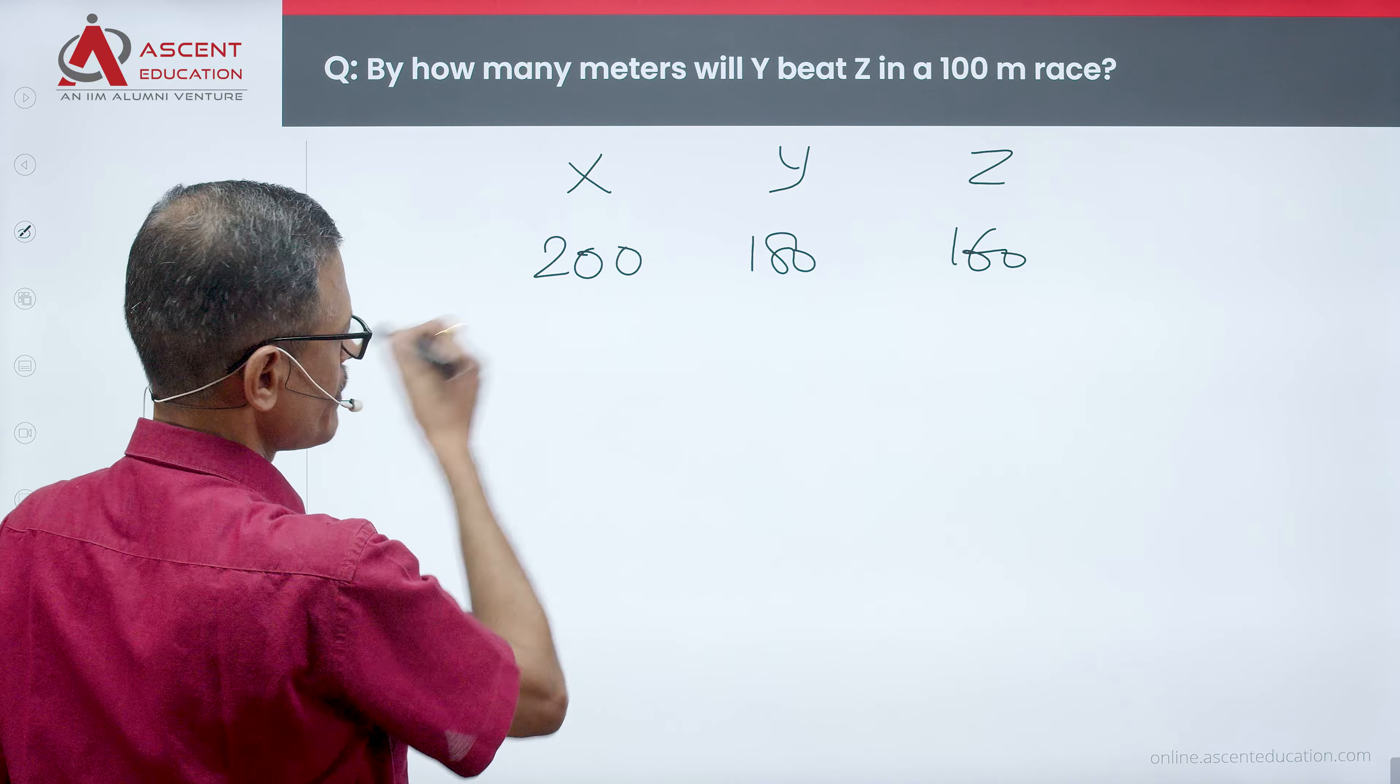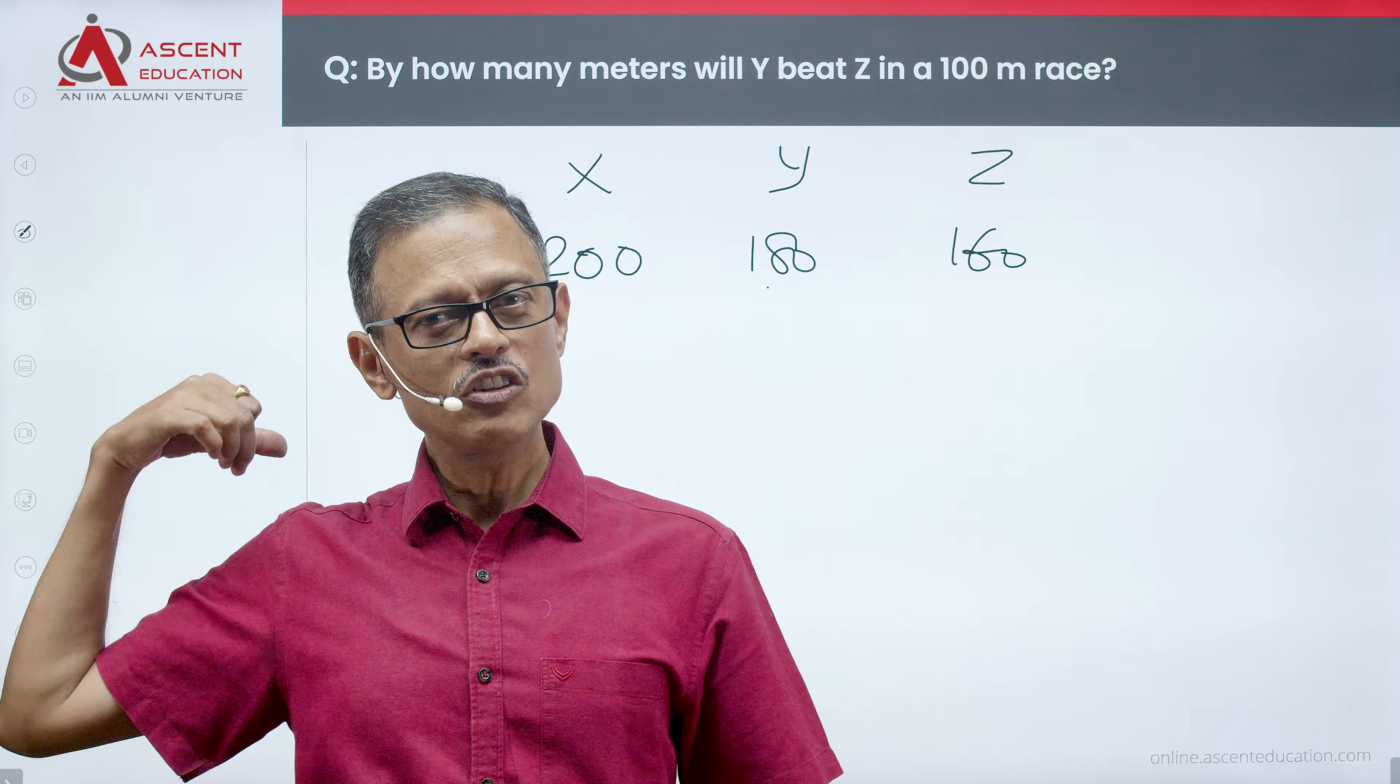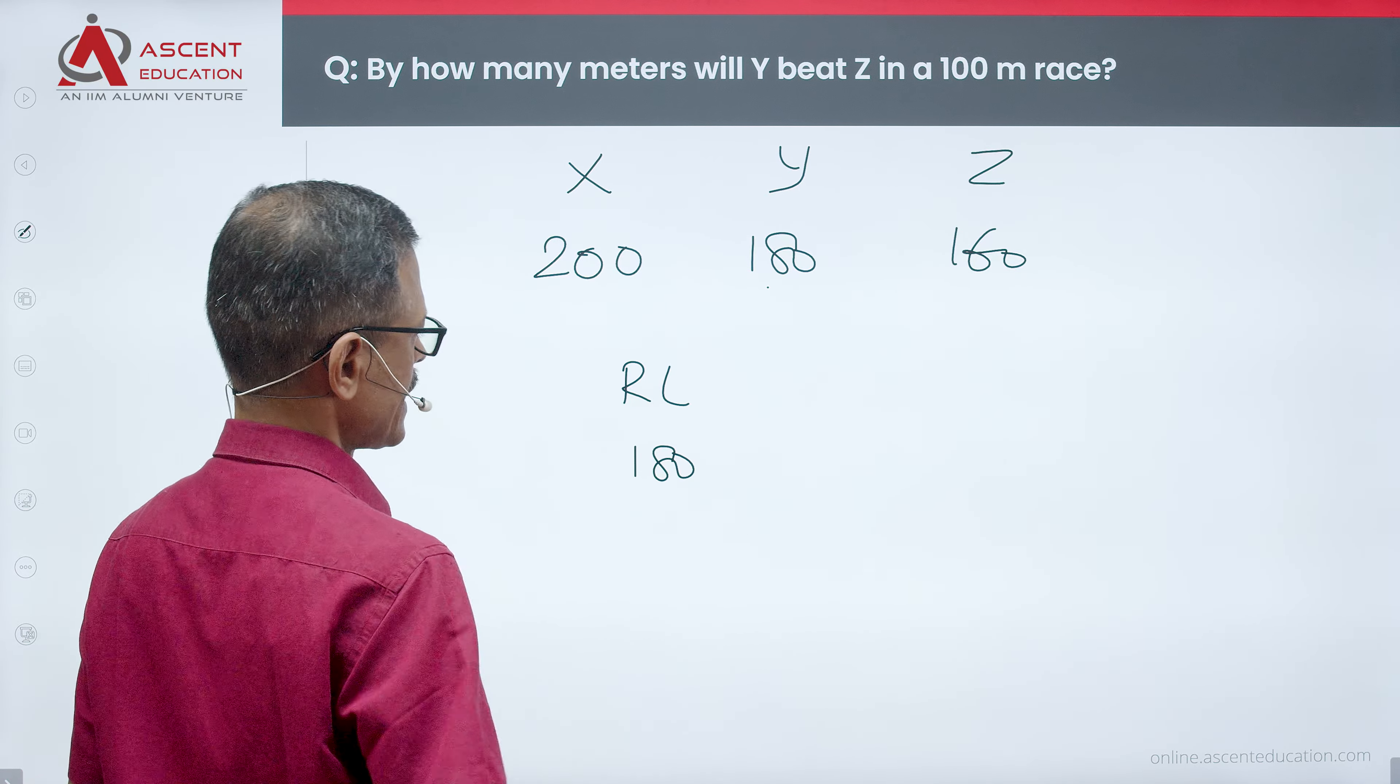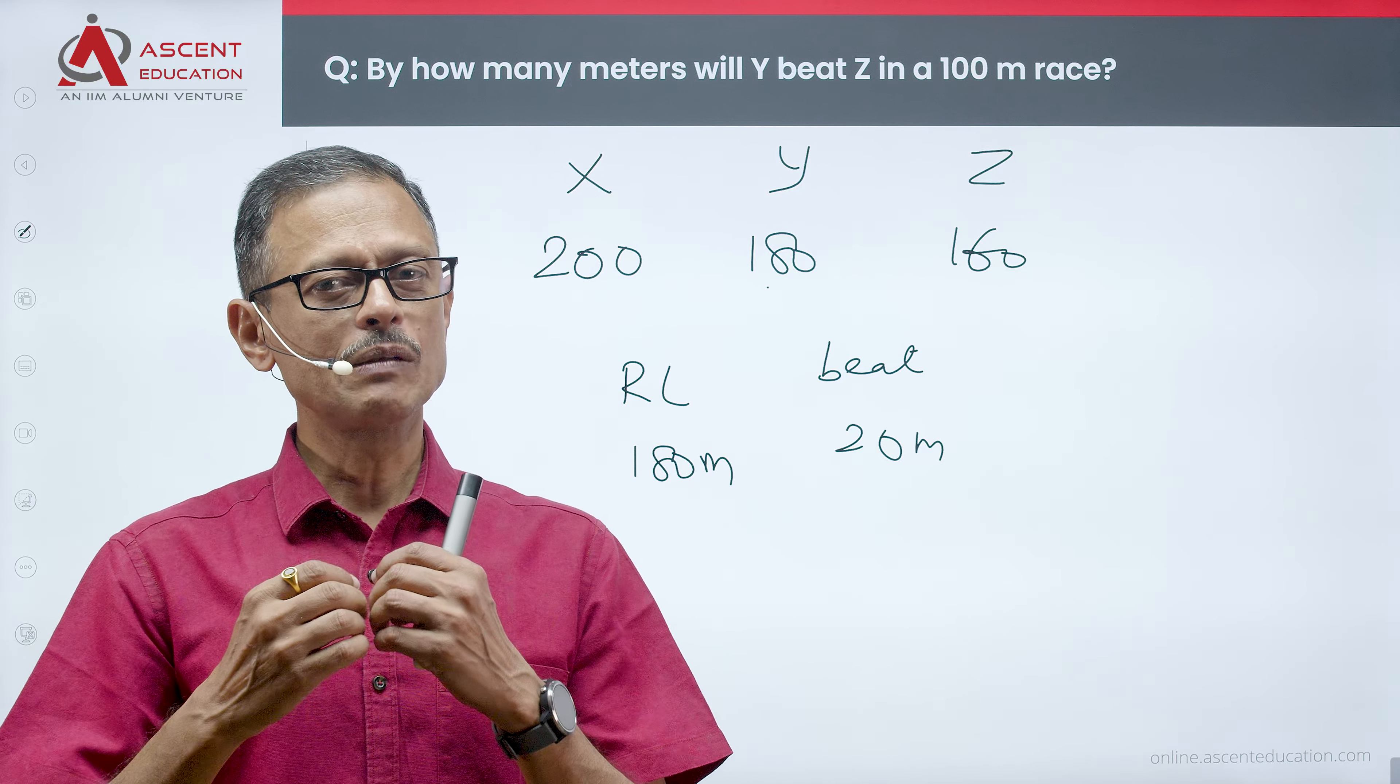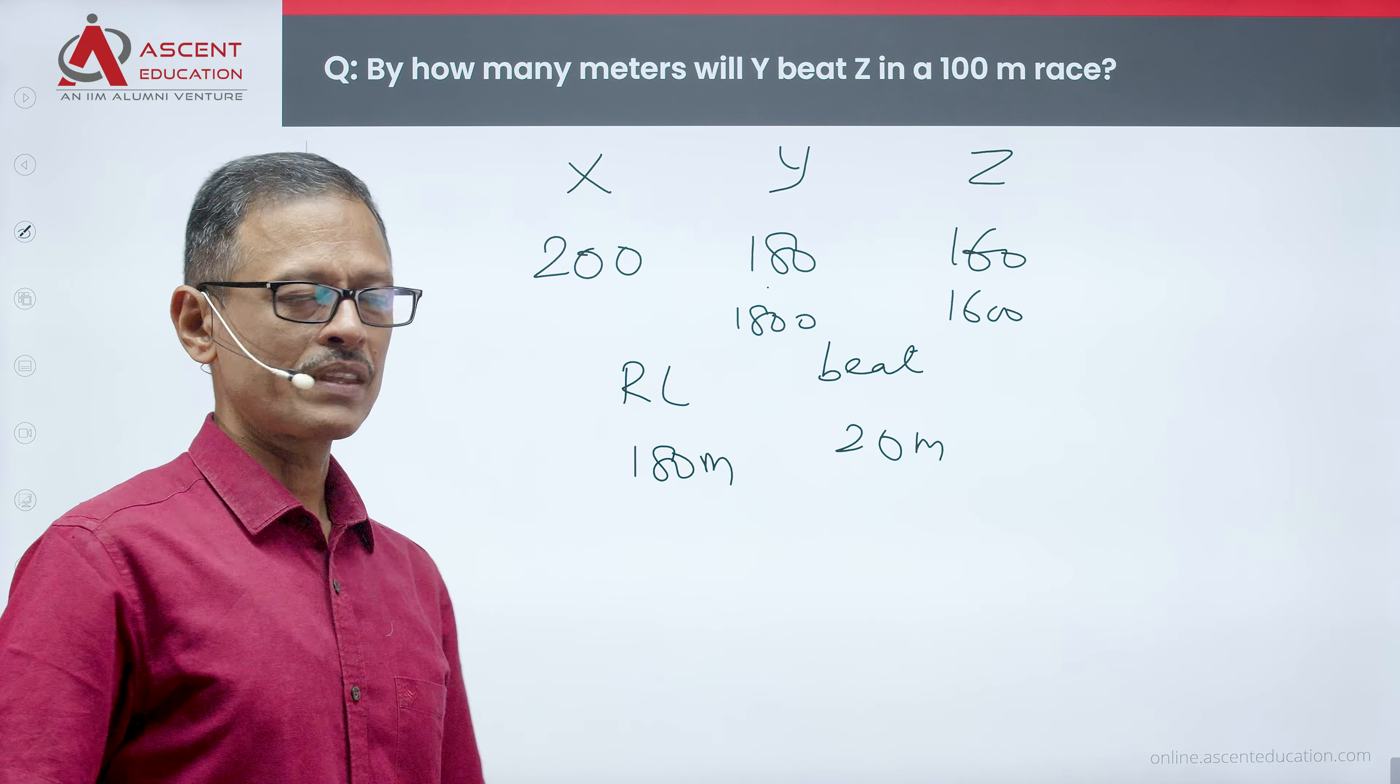Now we know X, Y, and Z. Y and Z run a 100 meter race. Y runs 180, Z runs 160. So in a 180 meter race, Y will beat Z by 20 meters. The race length is 180. Y will beat Z by 20 meters. If Y and Z run at the same speed as before, Y will beat him by 20 meters. This proportionality is maintained and established.